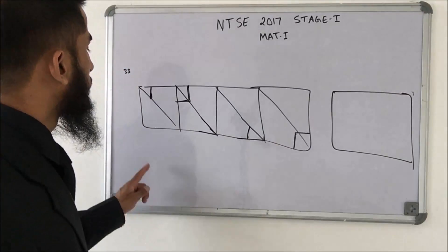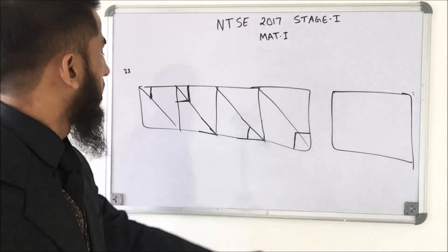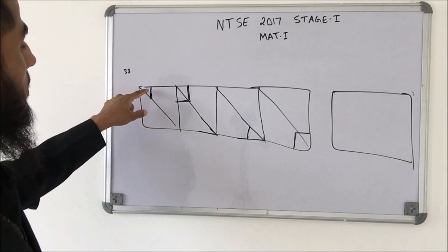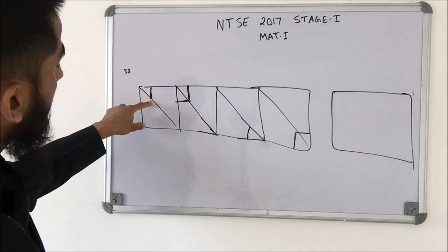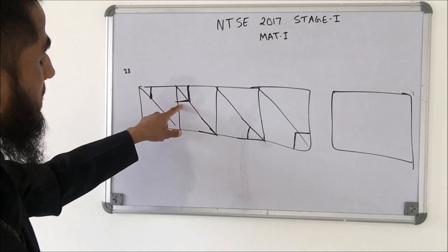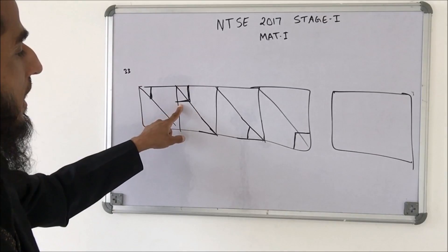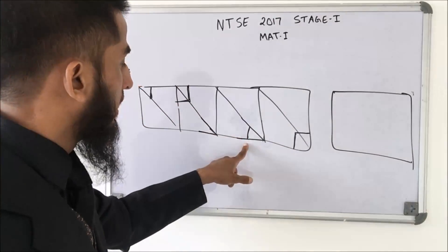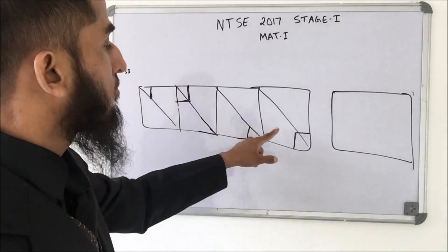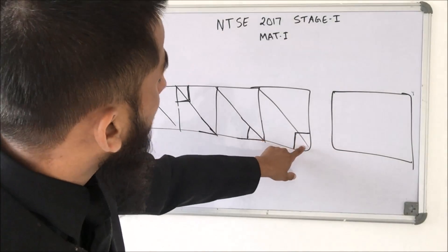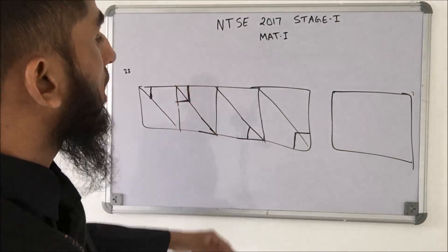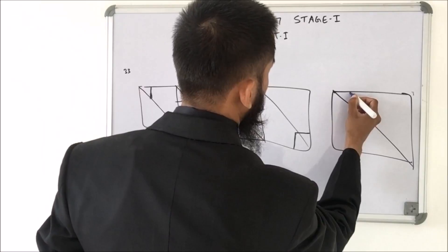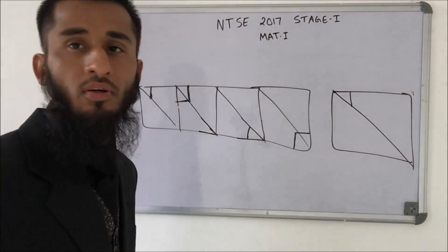Again, find the next figure in this sequence. We see a figure, then it is completed, then we go to the diagonal opposite point and get the next figure. So again we go back to the diagonal opposite point, and the sequence should repeat. This gives us the correct answer.